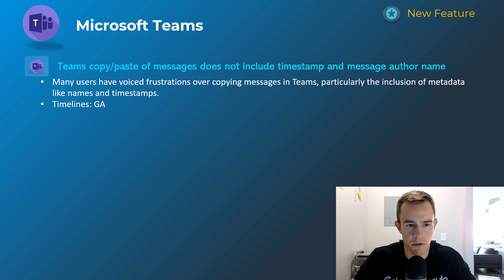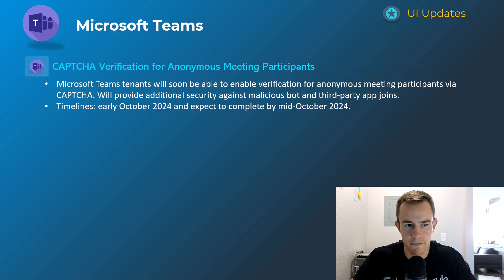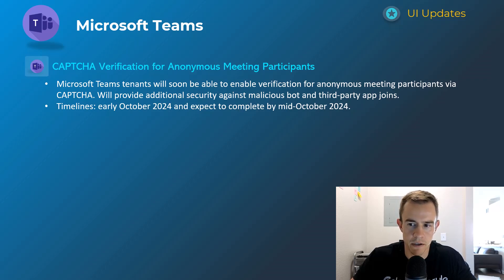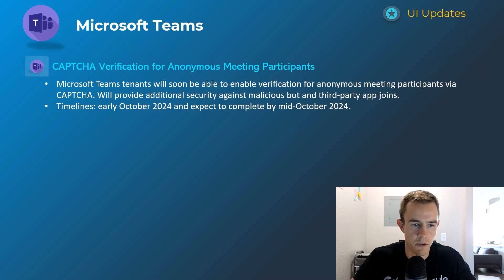Next one is for meetings and anonymous participants. This is really to help against malicious bot and third-party app joins to your meetings. Generally speaking, you'd have a policy that does not allow anonymous meeting joins, but this is also adding CAPTCHA verification as well. The timeline for this one is early October, complete by mid-October.